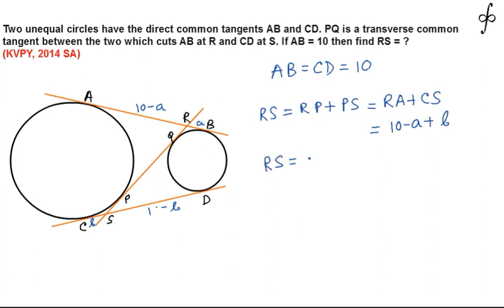The length RS can also be written down as SQ plus QR. Now, SQ will be equal to SD and QR will be equal to BR due to the same logic. We can say that from S, SD is a tangent to the smaller circle that should be equal to SQ and from R, RQ and RB they should be equal.